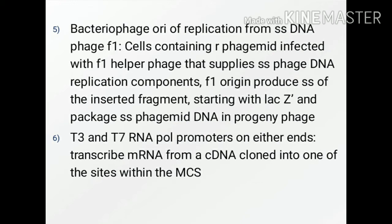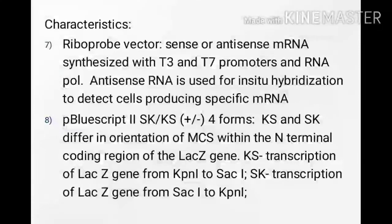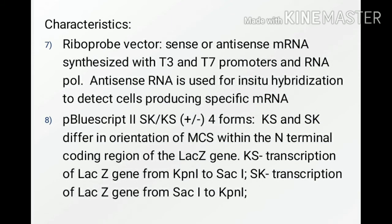T3 and T7 RNA polymerase promoters present on either end of the foreign DNA help to transcribe the mRNA from a cDNA cloned into one of the sites within the multiple cloning sites. P-bluescript is used as a riboprobe vector; sense or antisense mRNA can be synthesized with T3 and T7 promoters and the corresponding RNA polymerase enzymes. Antisense mRNA is used for in-situ hybridization to detect cells producing specific mRNA.